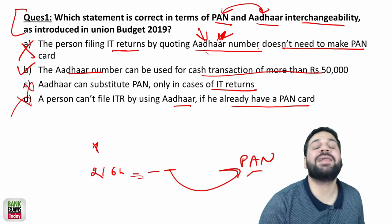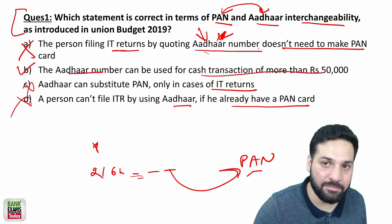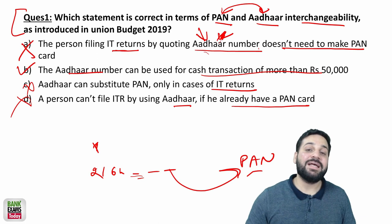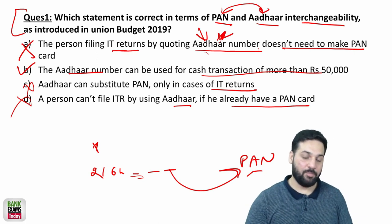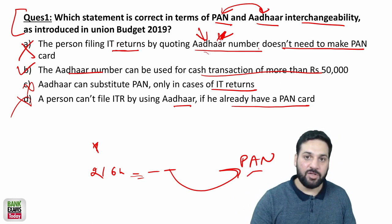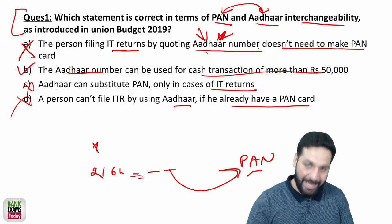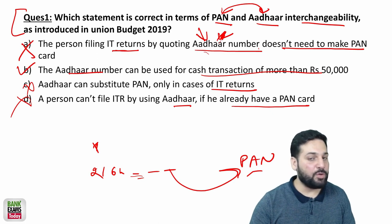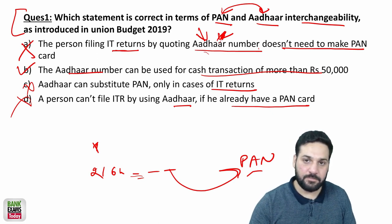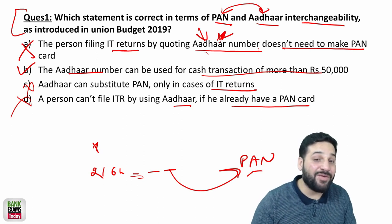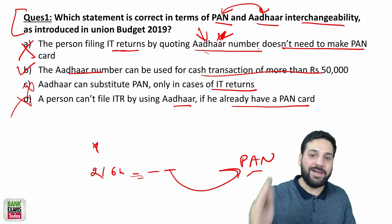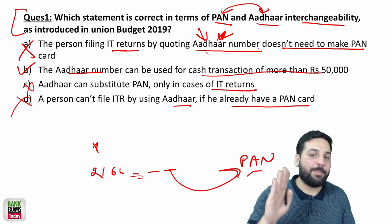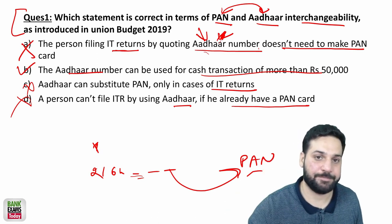A person can file an income tax return just by giving their Aadhaar number, because once you give your Aadhaar number to the income tax department they get to know your PAN — but for that you need to register for PAN. Aadhaar replaces PAN in usage, but you still need to register for PAN to file the income tax return. If you do not have a PAN number you cannot file an income tax return, but at the time of filing, if you already have a PAN card, you can quote your Aadhaar number instead.